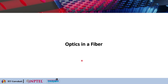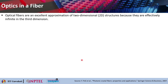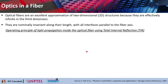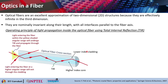Let us look at how optics behave inside a fiber. Optical fibers are an excellent approximation to two-dimensional structures, as they are essentially infinitely long in the third dimension and nominally invariant along their length, with all interfaces parallel to the fiber axis. The operating principle of light traveling inside an optical fiber is total internal reflection. Light entering within an allowed angular region is captured and propagates through the fiber, while light outside this incident angle simply exits through the cladding.